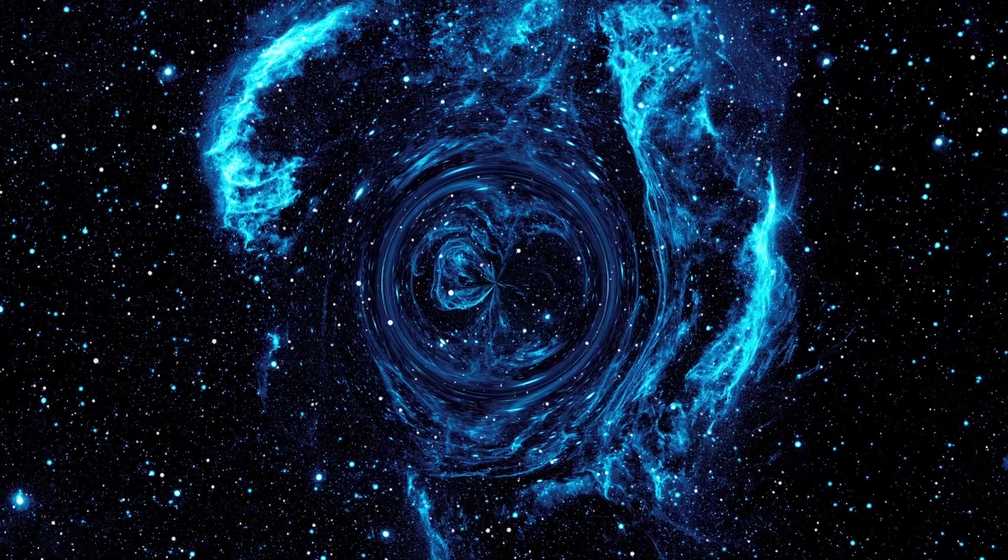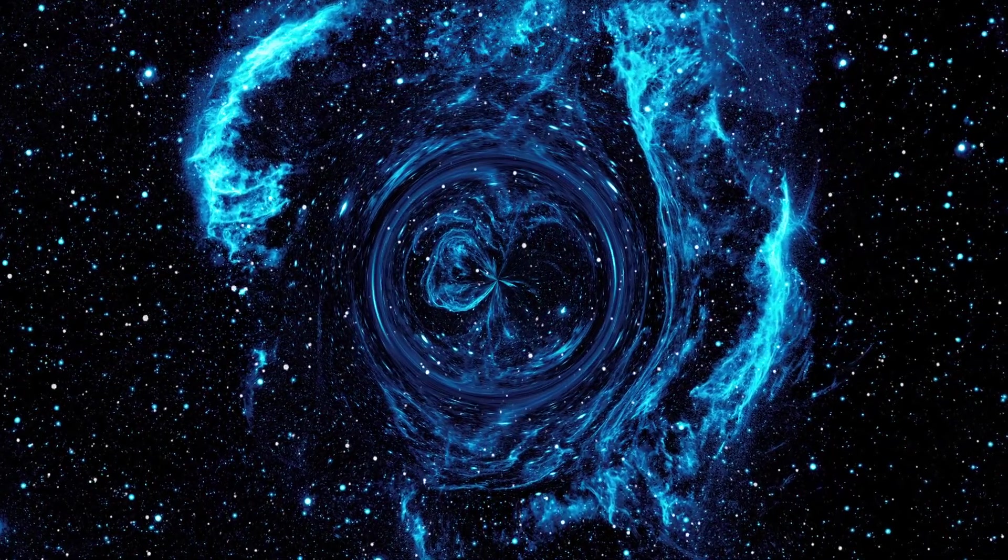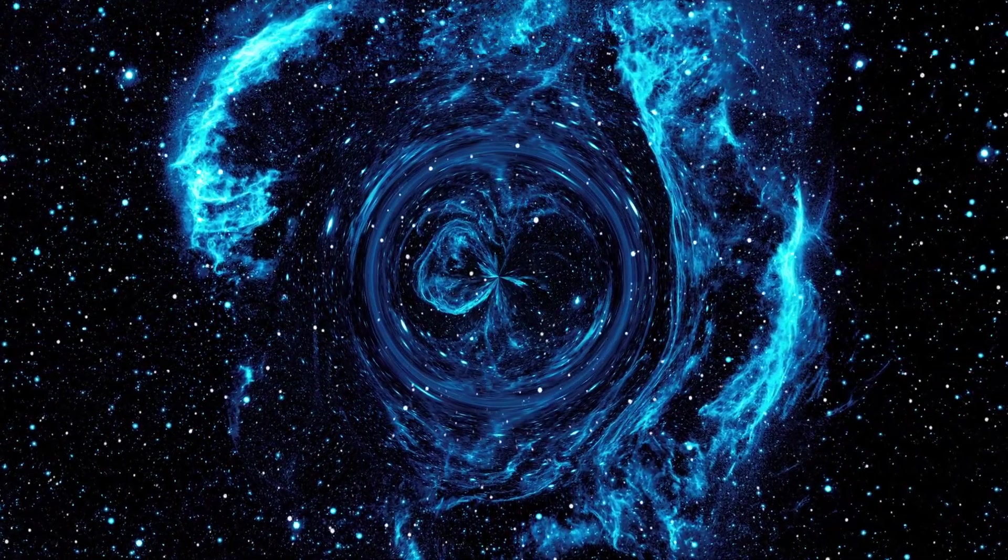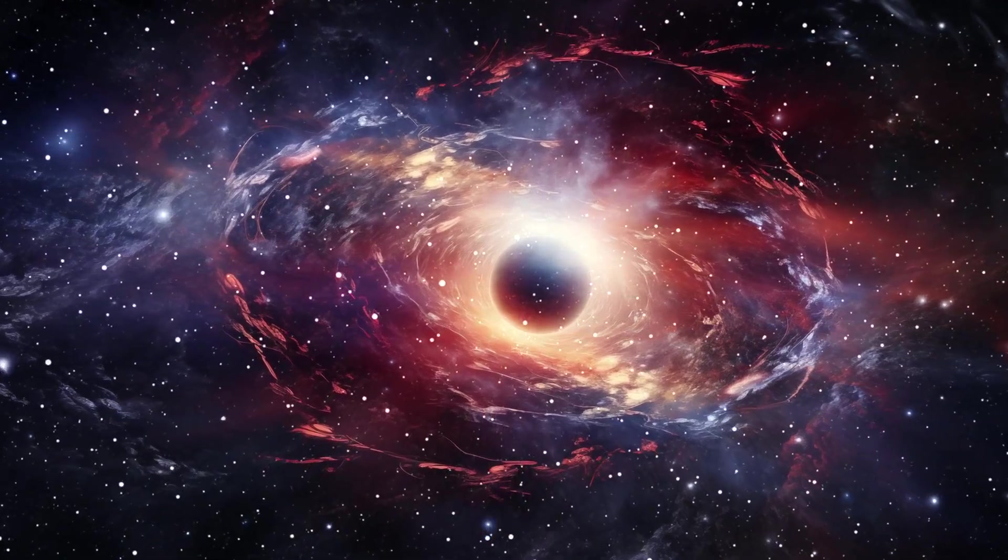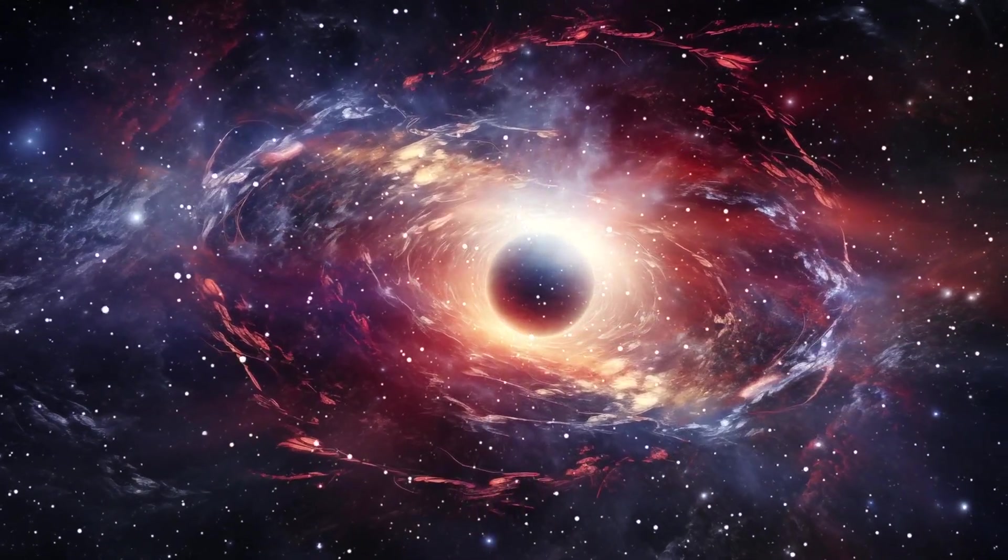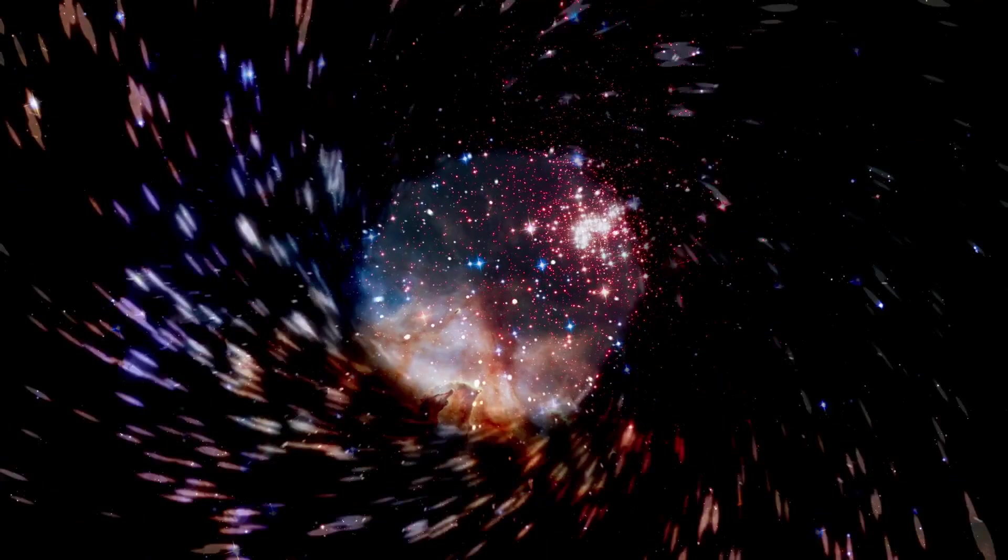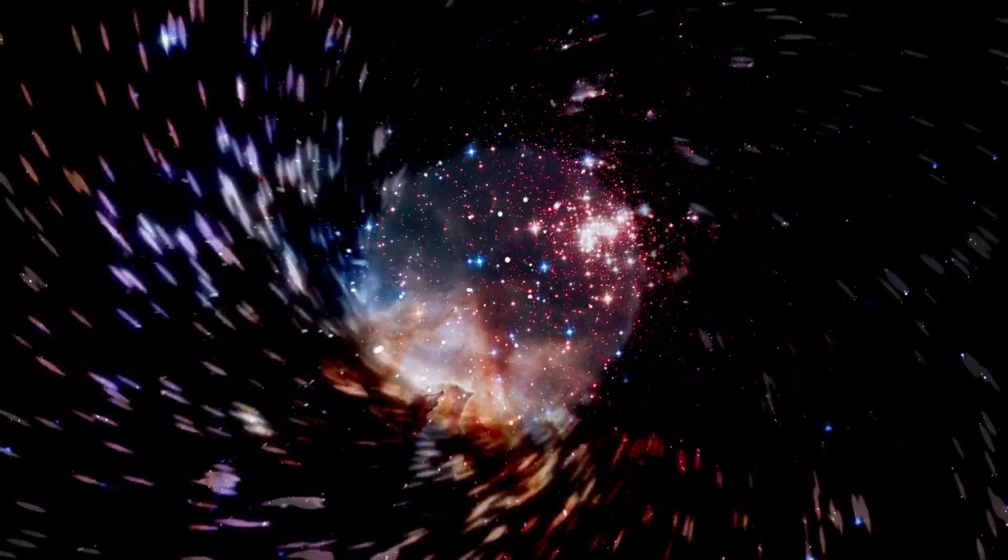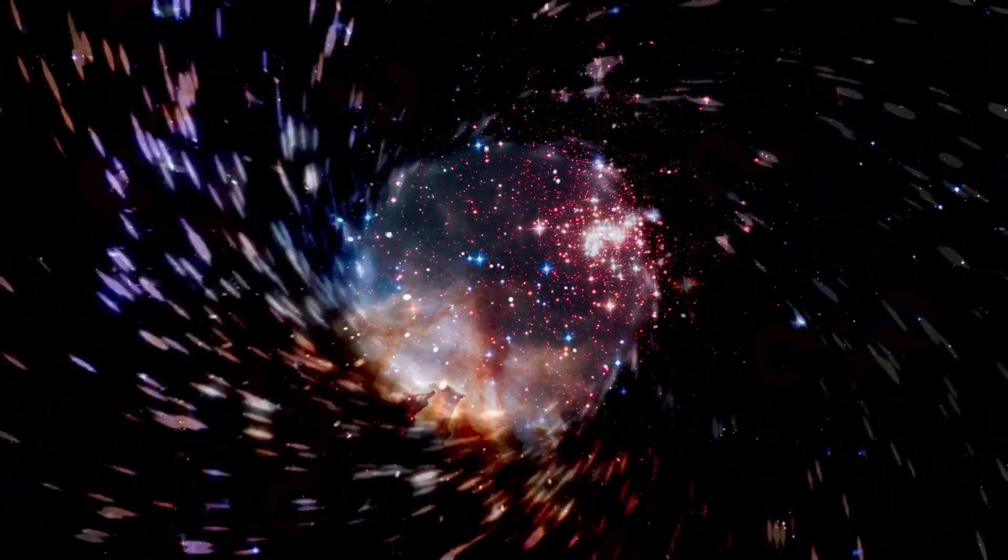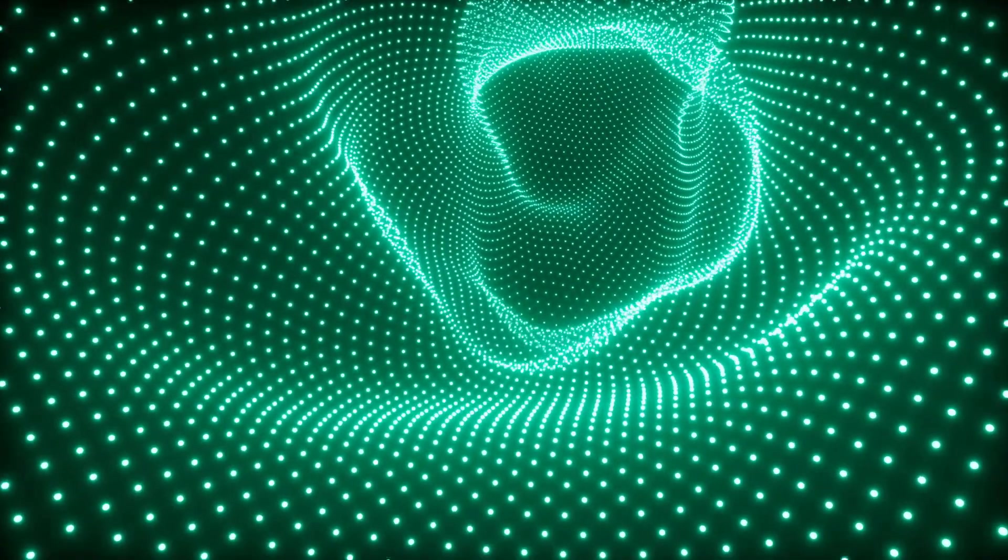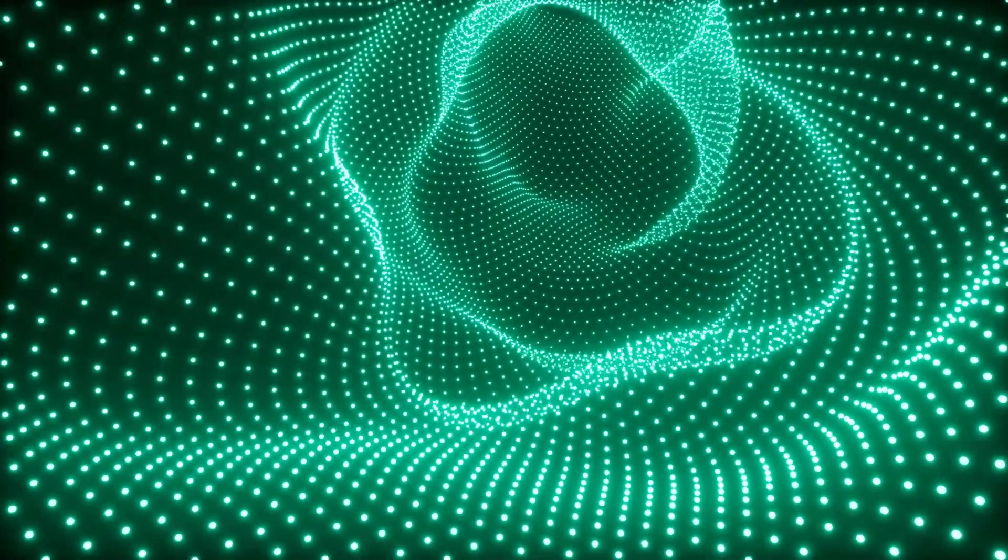But here's the catch. Making wormholes work would require what some brainy folks call exotic matter. It's like the unicorn of physics with magical anti-gravity powers that could keep a wormhole's entrances wide open, linking up different parts of the universe. The only bummer, exotic matter might just be wishful thinking. We haven't found any yet. It's more of a trick we used to tweak the math of Einstein's general relativity theory.